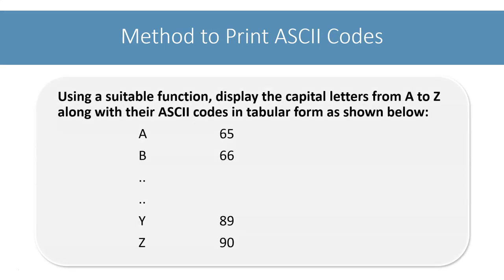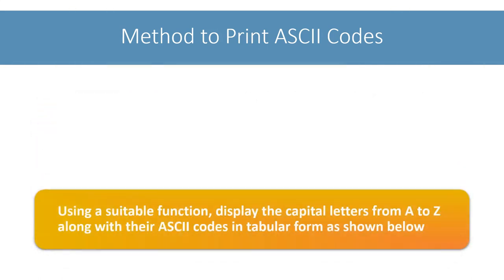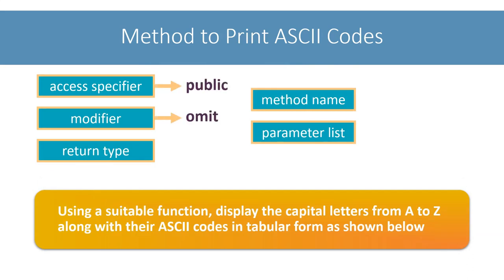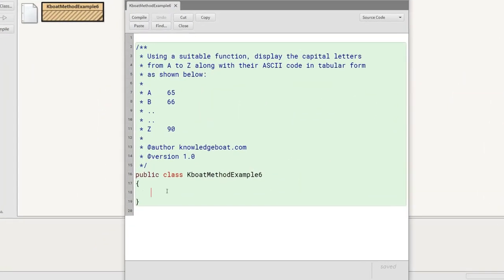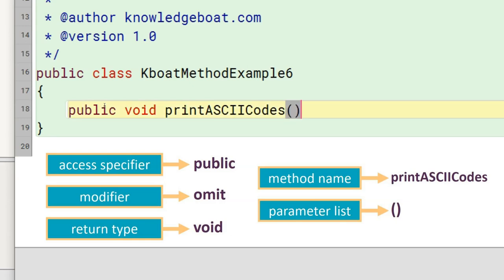The next example is: using a suitable function, display the capital letters from A to Z along with their ASCII codes in tabular form. The prototype of this method will have public access specifier, no modifier. This method must print letters from A to Z along with their ASCII codes, so it doesn't need any inputs and will not return any value — return type will be void and parameter list will be empty. The question gives no name, so we will call it printAsciiCodes. I will go to BlueJ and start coding, with the prototype being public void printAsciiCodes with an empty parameter list.